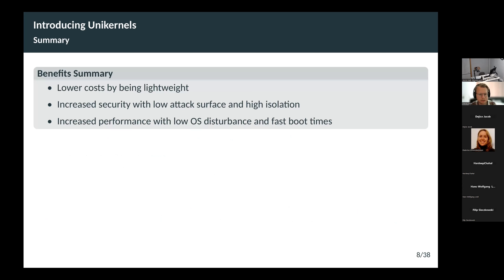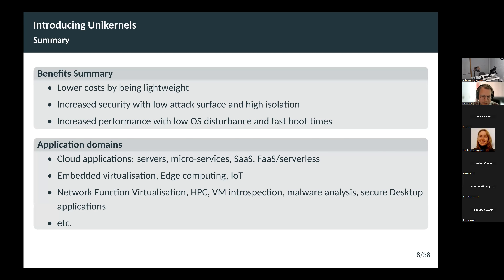To summarize this introduction to unikernels: they lower costs by being more lightweight than traditional virtual machines; they have increased security because of a low attack surface; a strong level of isolation compared to containers; and they get some performance boost in some scenarios. Because of that, there are many application domains — cloud applications, serverless computing, microservices, IoT, embedded virtualization, high-performance computing, security applications, and more.